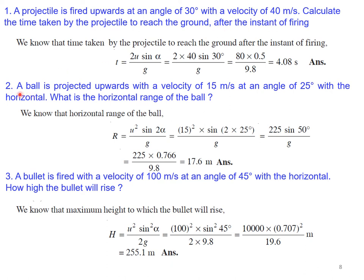Problem 2: A ball is projected with a velocity of 15 m/s at 25° to the horizontal. Find the horizontal range. Using R = u²·sin(2α)/g = 15² × sin(50°) / 9.8 = 17.6 meters.